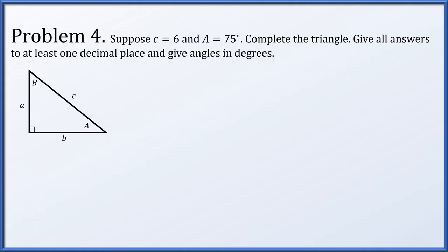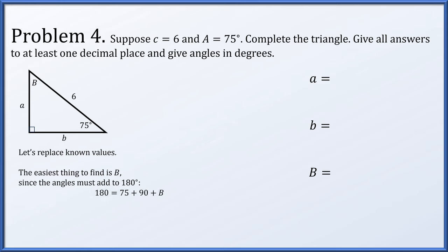In problem 4, suppose the hypotenuse c is 6 and angle A is 75 degrees, let's complete the triangle. So we are missing two sides and one angle. Again, let's replace our known values with angle A being 75 degrees and the hypotenuse being length 6. Still, the easiest thing to do is find the single missing angle. Because the angles of a triangle add up to 180 degrees, we pretty quickly solve that angle B must be 15 degrees.